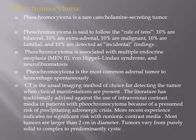Pheochromocytoma is a rare catecholamine-secreting tumor that follows the rule of 10: 10% bilateral, 10% extra-adrenal, 10% malignant, 10% familial, and 10% detected incidentally. It is associated with syndromes including MEN-2, Von Hippel-Lindau syndrome, and neurofibromatosis. It carries a high risk of spontaneous hemorrhage. CT is the method of choice for detecting the tumor, and intravenous contrast was traditionally considered contraindicated due to risk of precipitating an adrenergic crisis.